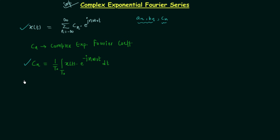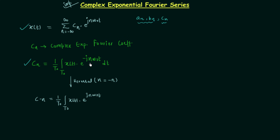Now we will move to another important point, which is the property of cₙ. If you perform the reversal operation — this means in place of n you substitute minus n — you will have c₋ₙ equal to 1 over T₀, integrated over T₀ of x(t) multiplied by e raised to power positive jn·ω₀t. Let's call this equation 1.